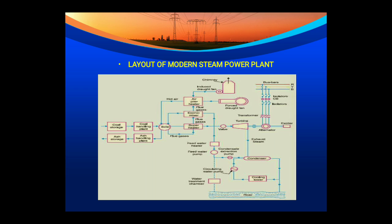The water in the condenser that helps condense the steam is heated by the radiation process. This water is supplied to the cooling tower for reuse in the condenser. The water initially supplied from a river or canal for making steam passes through the water treatment chamber. A source of water such as a river or canal is required for a modern steam power plant.